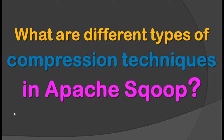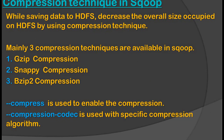Hello guys, good morning. I am Santosh Singh and today we are going to see what are different types of compression techniques in Apache Sqoop. While saving data to HDFS, we decrease the overall size occupied on HDFS by using compression techniques. Mainly three compression techniques are available in Sqoop: first is gzip, second is snappy, and third is bzip2.